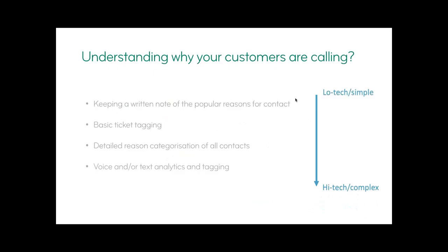From a contact center perspective, understanding where customers are contacting you — whether by call, live chat, or email — can be done in many ways, ranging from sampling small amounts to covering as many tickets as possible. The approach depends on your budget and team size. With a team of three or four agents and no ticket tagging, the best approach was simply giving them a piece of paper to keep a tally — telling them to ring a bell every time a particular issue occurred. Very quickly you can spot patterns.